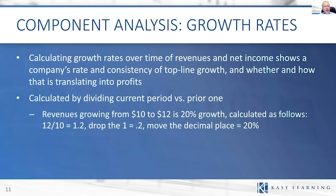Growth rates are something investors really care about — is a company growing, how rapidly, how sustainable? Calculating growth rates is straightforward: divide the current period by the prior period, subtract one, and convert to a percentage. If a company's revenues grow from $10 to $12, that's 20% growth. The calculation: 12 divided by 10 is 1.2, drop the one, 0.2, move the decimal place — that's 20% growth. Just keep that math in mind as we do the exercises.